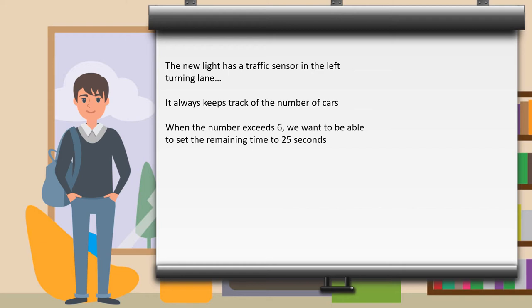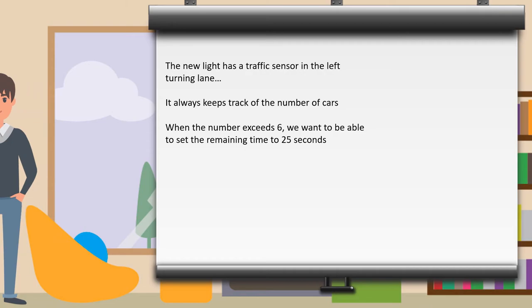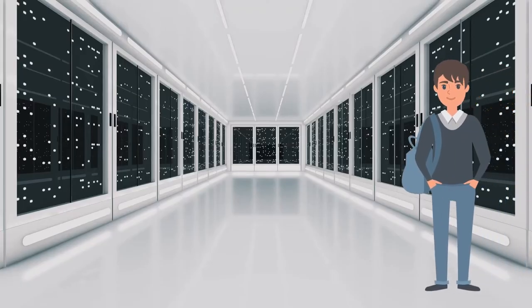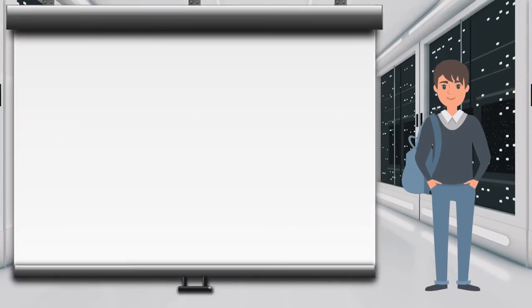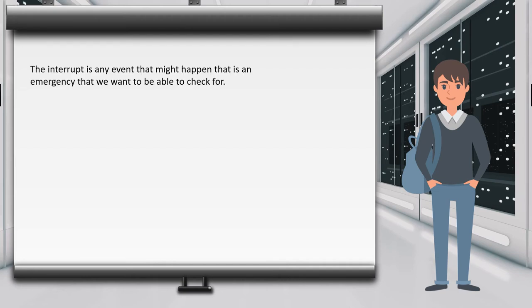We can also check for more conditions, including the last one we want to check, which is our interrupt. The interrupt is any event that might happen, that is an emergency that we want to be able to check. It could be any exterior method that we want to put into this placeholder. It's different because we have to check for it on both sides of this loop. If there is any interrupt where, let's say, we flash all red or all amber, the system has to reset after that interrupt.